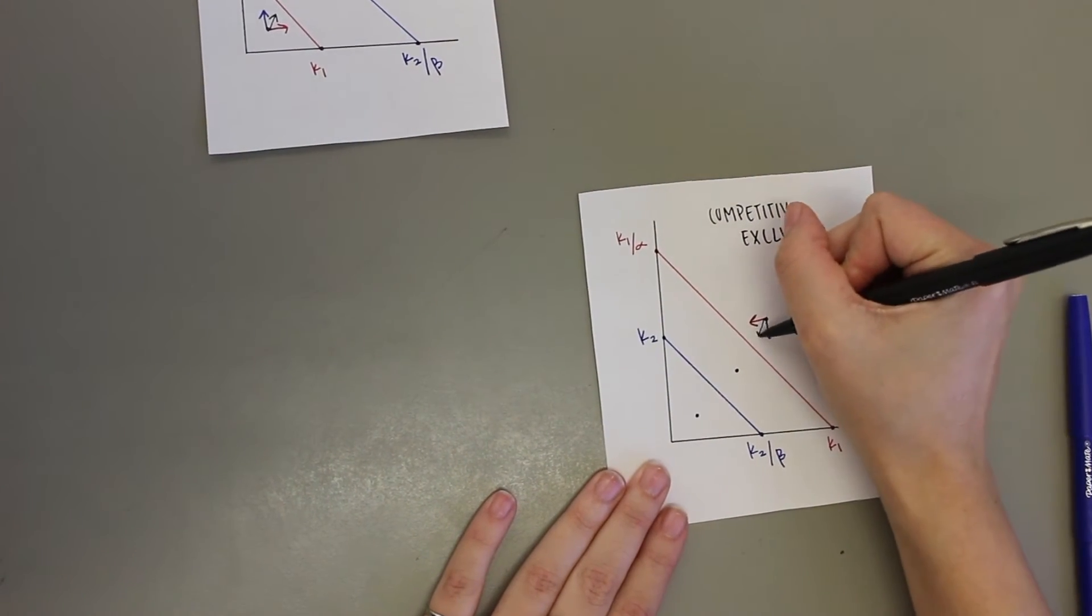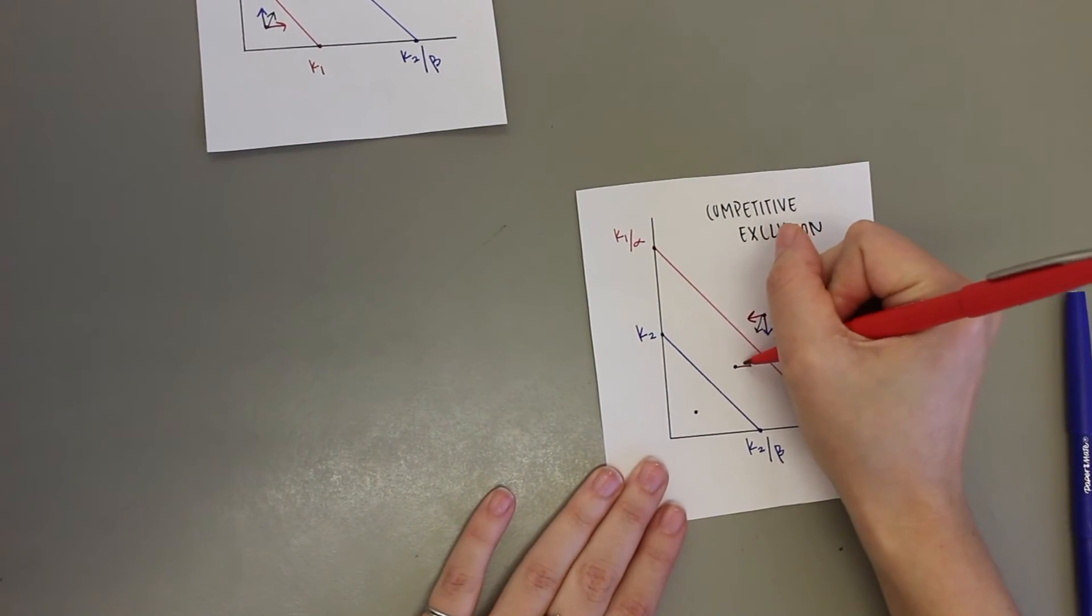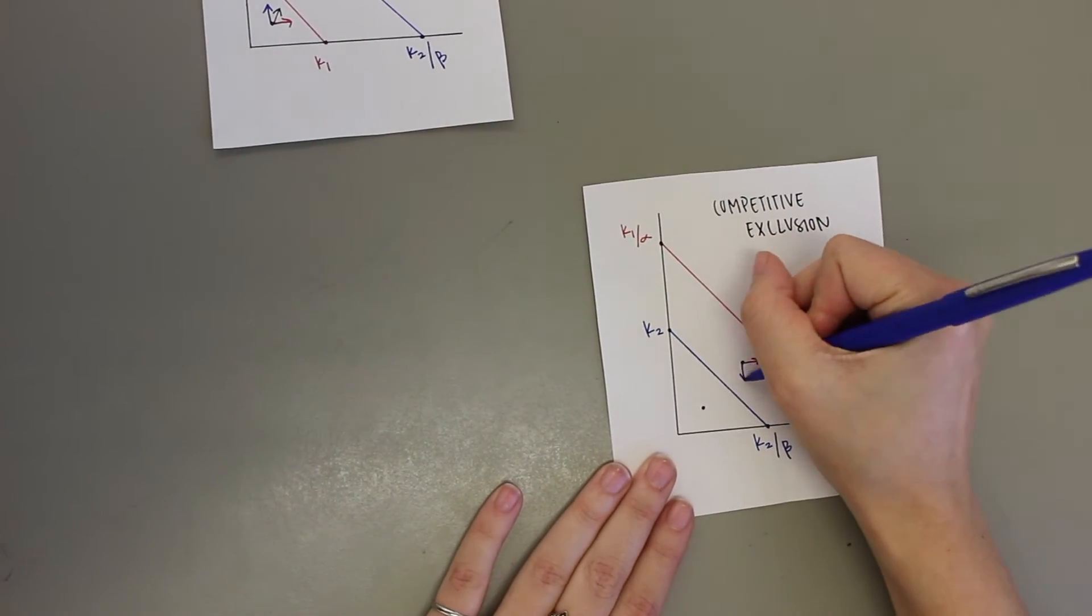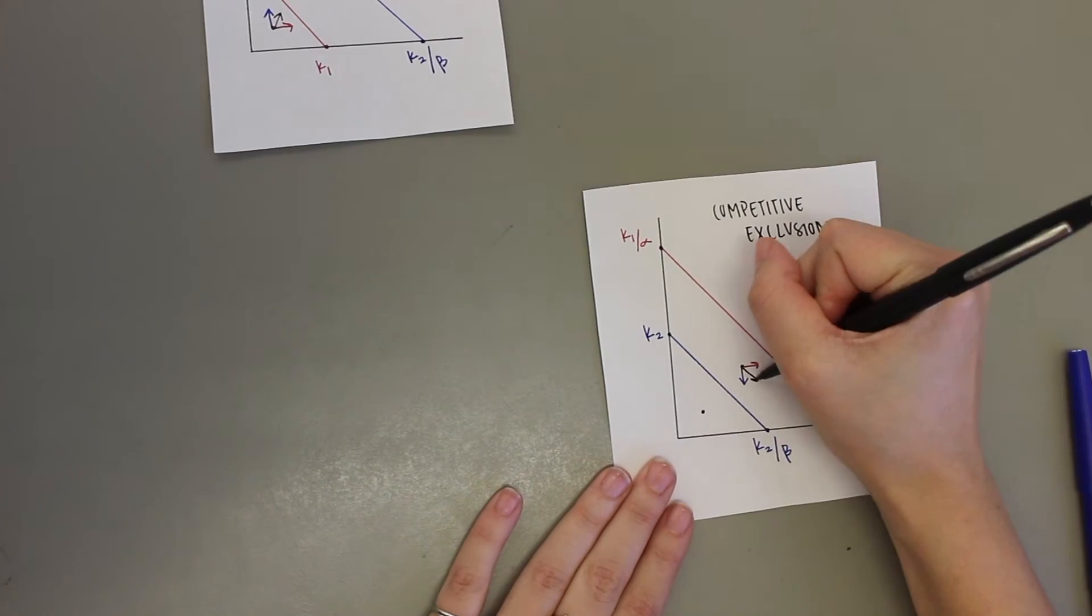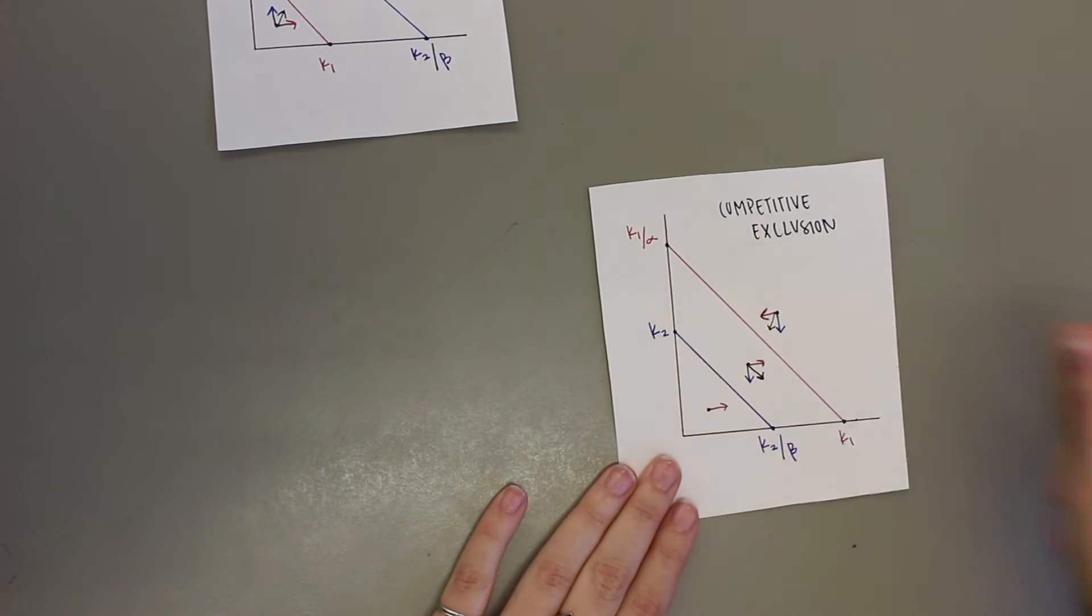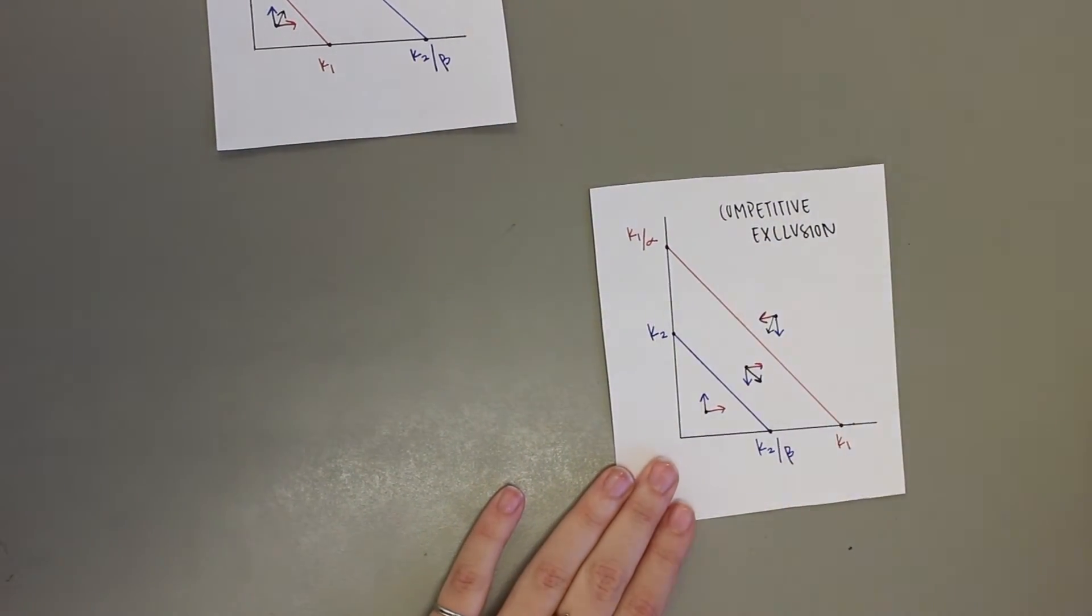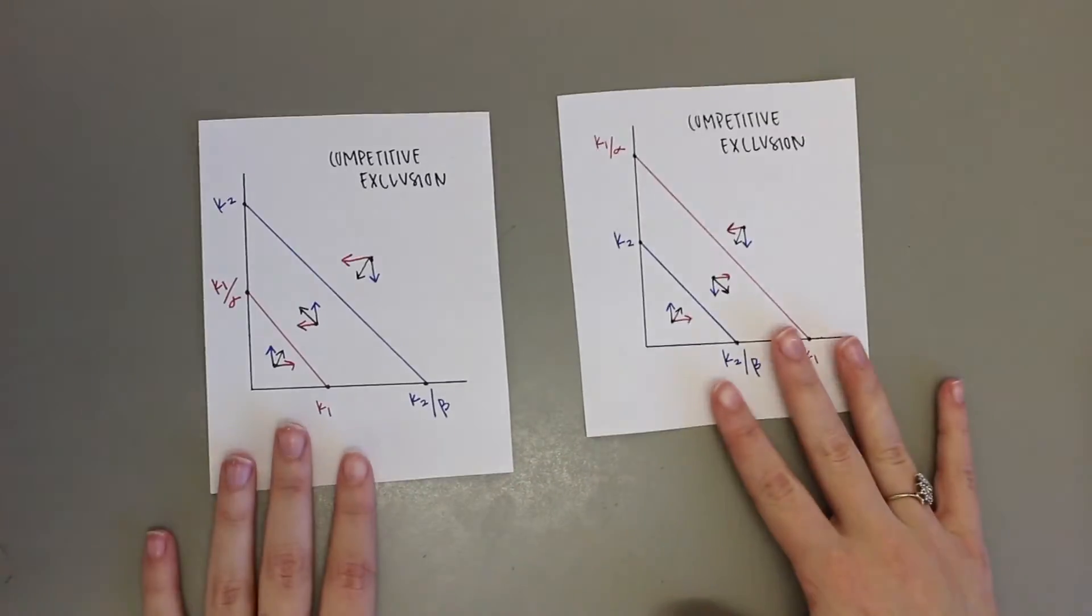If the populations lie in between the two species, species one will increase and species two population will decrease. If the populations lie below species two carrying capacity, then both populations will increase because it is below the carrying capacity of both species.